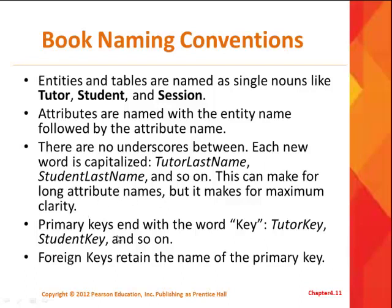What the book does here — and they can do what they want — is they end their primary key fields with the word 'key.' Usually what we've seen in databases like Access, the primary key ends with the word ID or number. For instance, in a student table, the book calls the primary key 'student key' instead of student ID or student number. Same with an order table — instead of order ID or order number, the book would call that 'order key.' I just don't like that convention, but that's okay.